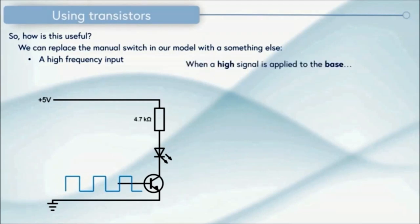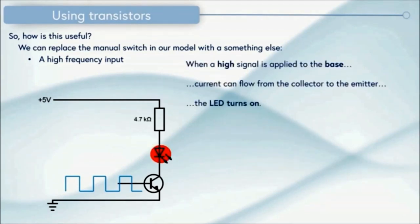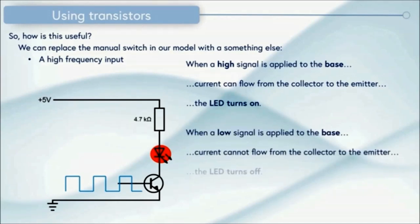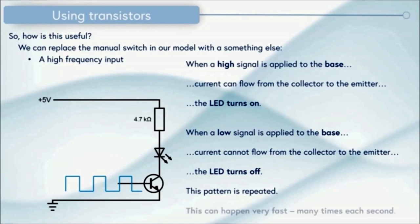When a high signal is applied to the base, current can flow from the collector to the emitter and the LED will turn on. When a low signal is applied to the base, current cannot flow from the collector to the emitter and the LED will turn off. This is particularly useful because the pattern is repeated due to our input waveform and it can happen very fast, many times each second, certainly much faster than you can push that switch.